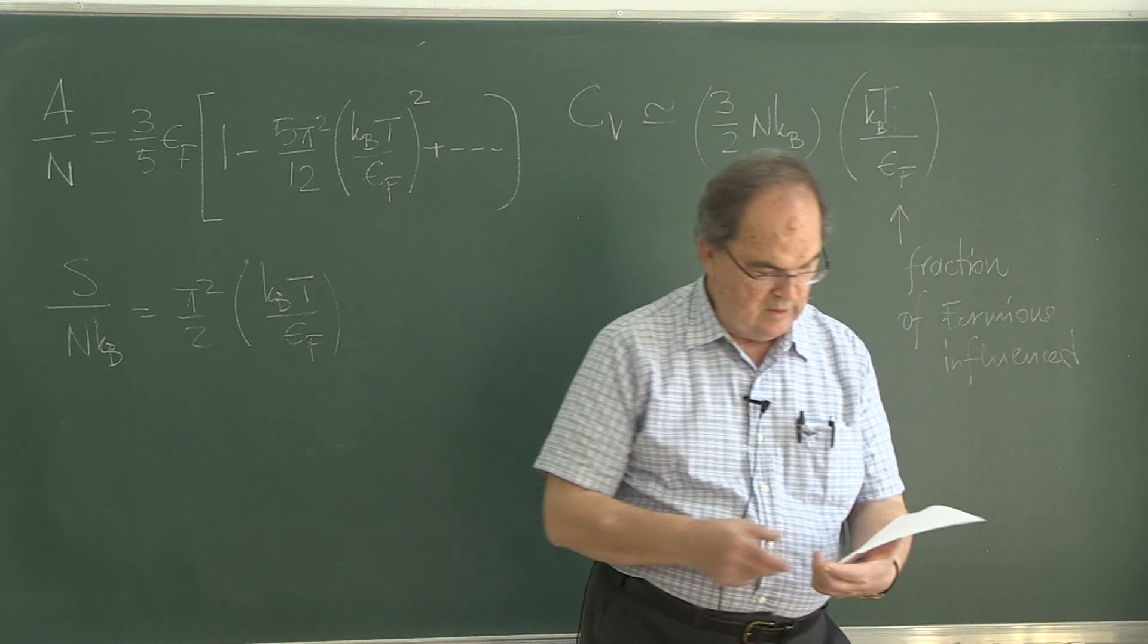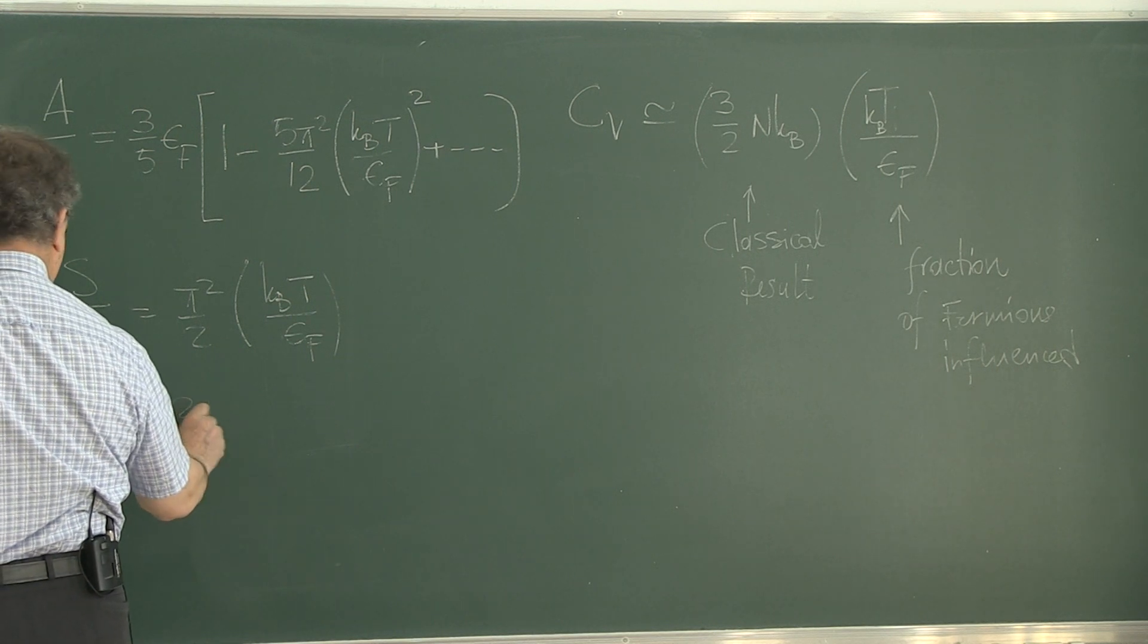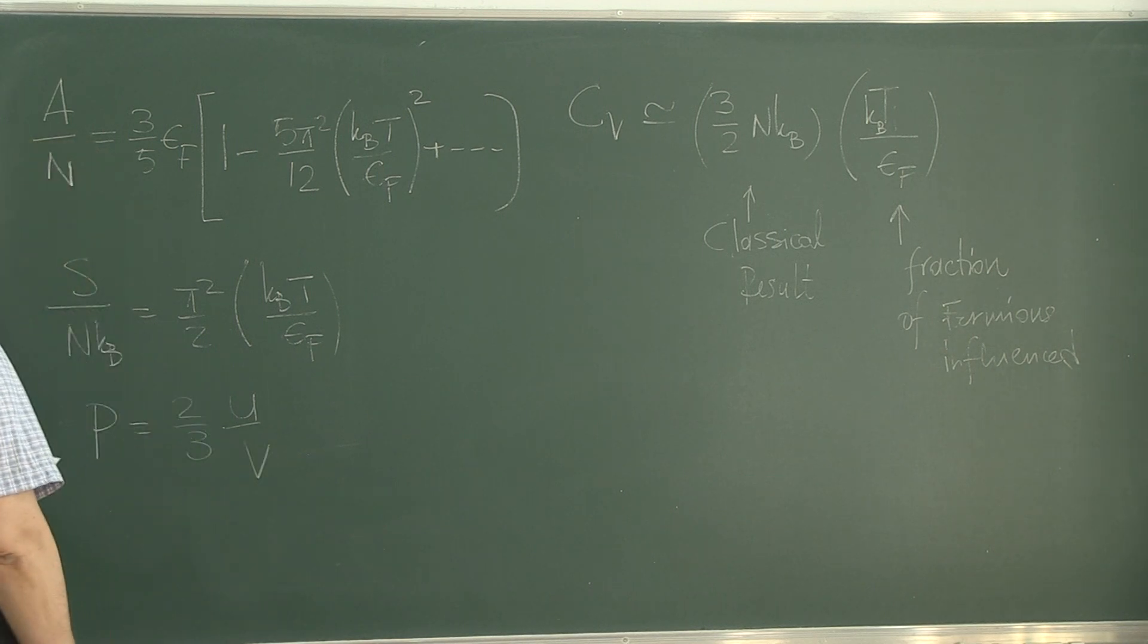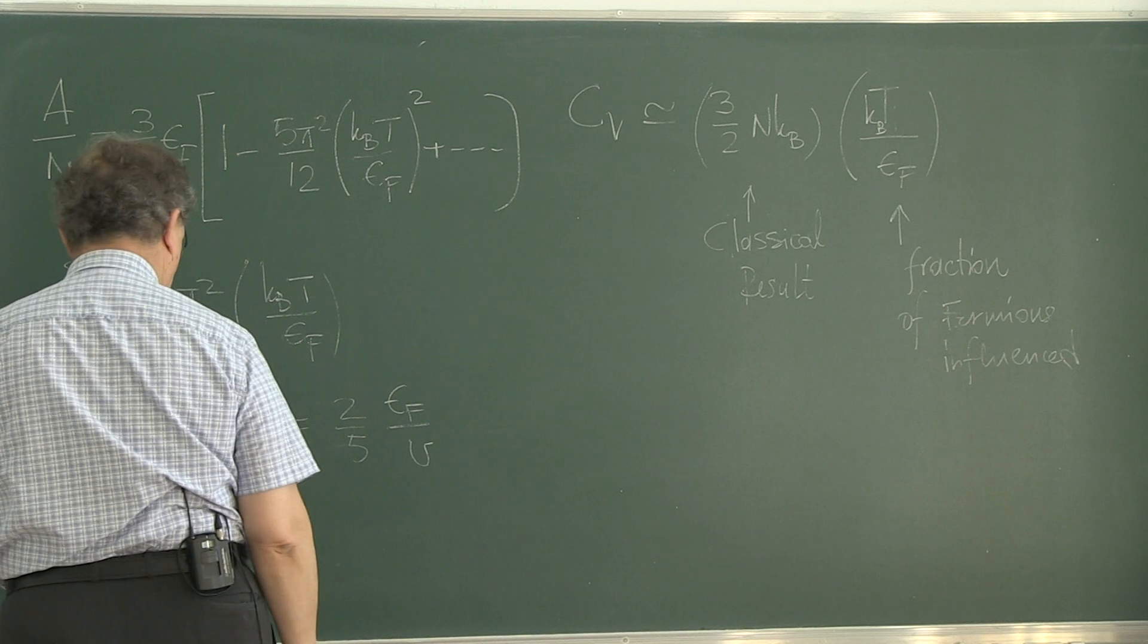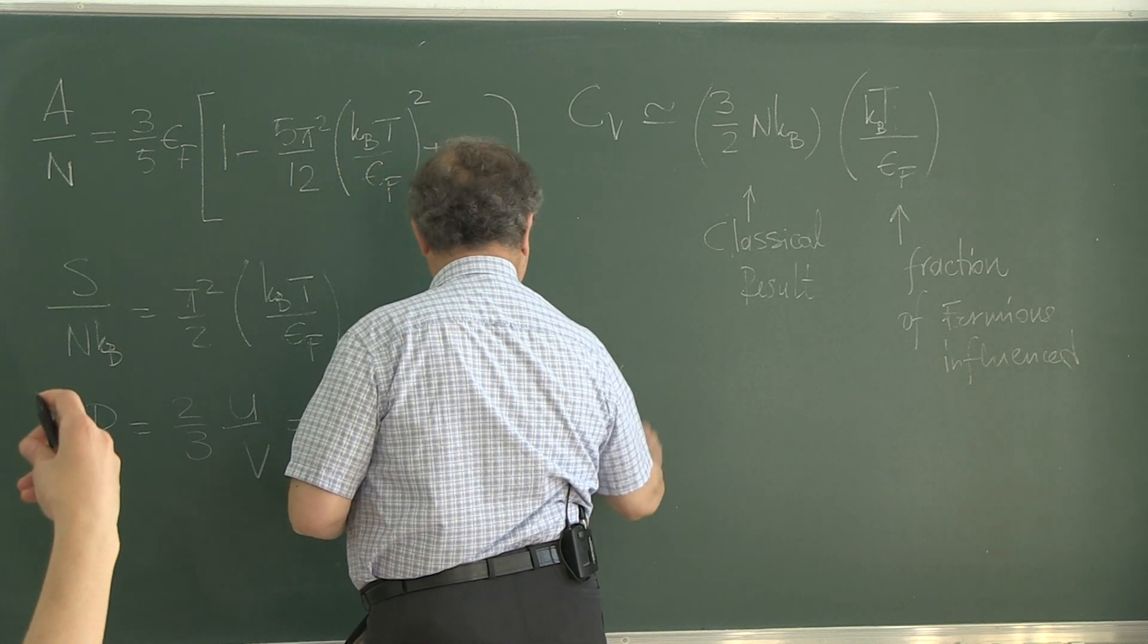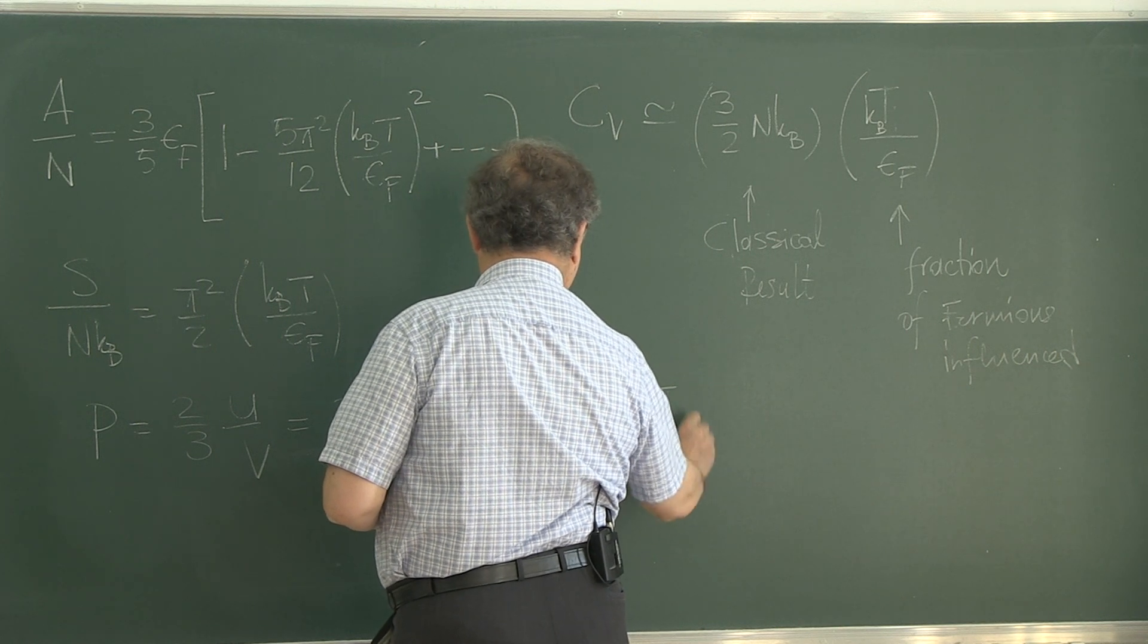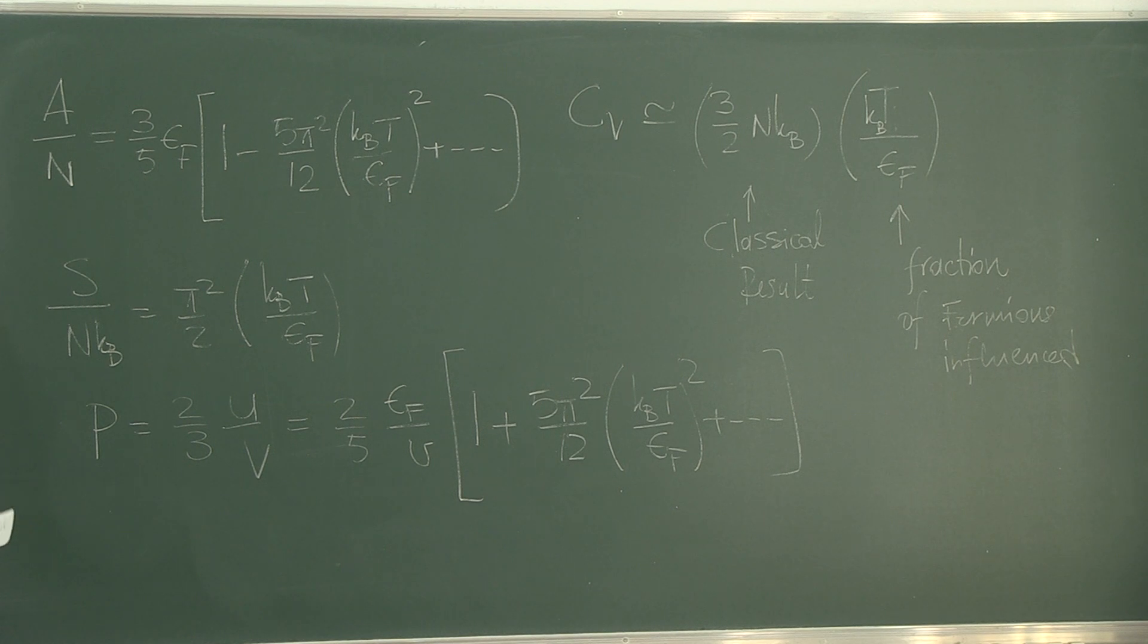And another thing which is interesting, physically we have to deal with it, is the pressure. Pressure comes out to be, from that general expression, 2 over 5 n eF over V, 1 plus 5 pi squared over 12 T over TF squared. Can you tell me something about this? It doesn't go to zero. Very good. Even at zero temperature, pressure doesn't become zero. Contrary to the other case.